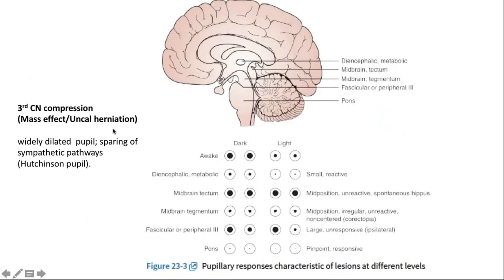Moving on to pupils — part of the brainstem reflexes — I'll explain them in a rostrocaudal manner. Bi-hemispheric dysfunction may not cause specific pupillary changes. The pupils will be small, round, symmetrical, and still reactive to light — we call them diencephalic pupils.